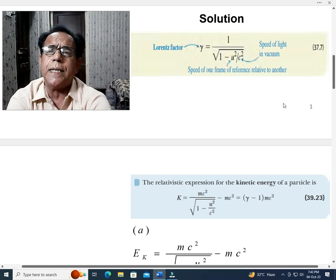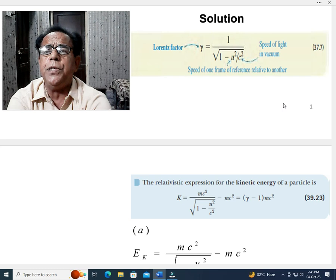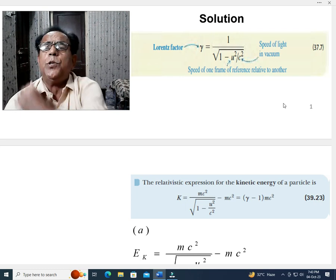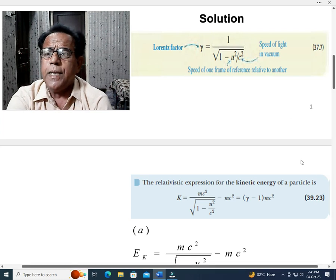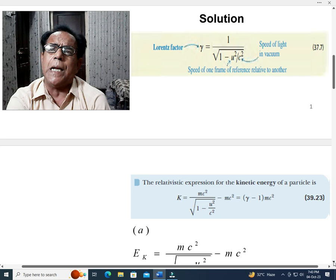Lorentz factor gamma is equal to 1 over square root of 1 minus u squared over c squared, where u is the speed of one frame of reference relative to another, while c is the speed of light in vacuum. This is only about Lorentz factor gamma.